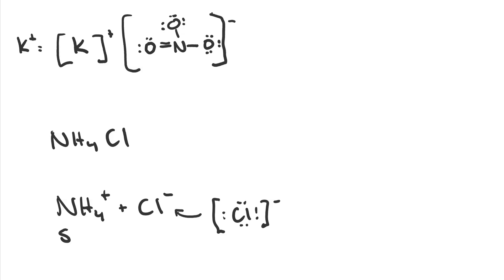For the NH4 plus, nitrogen has five, each hydrogen has one, one times four is four. But because of the plus one charge, that means we have to subtract one electron. That gives us eight electrons total. So by the time we have drawn our skeleton, we've used up all of them.